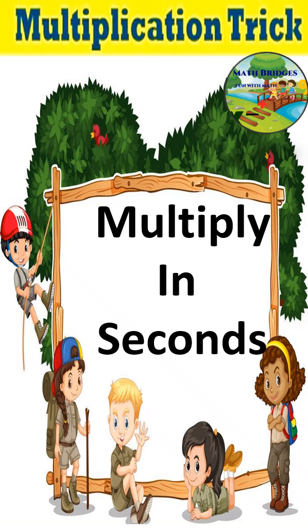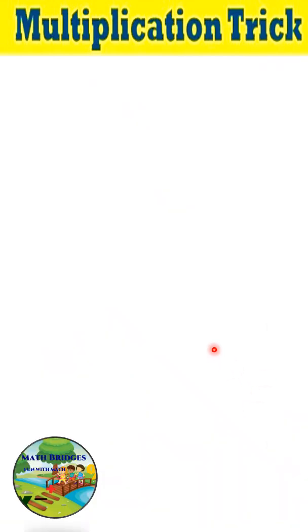Hello everyone, welcome to Math Bridges Fun with Math. In this video, let's see a multiplication trick which you can solve within seconds. This trick works when you have same numbers like 22, 33, 44, or 66 multiplying with different digits, like 22 times 5.